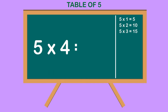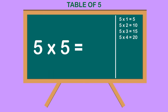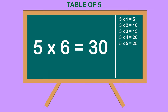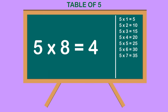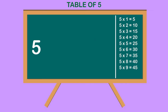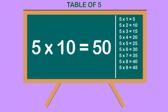5 4s are 20, 5 5s are 25, 5 6s are 30, 5 7s are 35, 5 8s are 40, 5 9s are 45, 5 10s are 50.